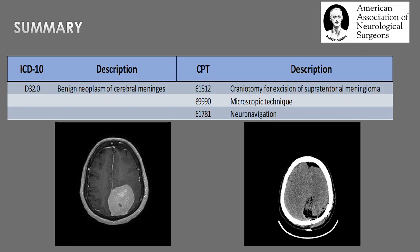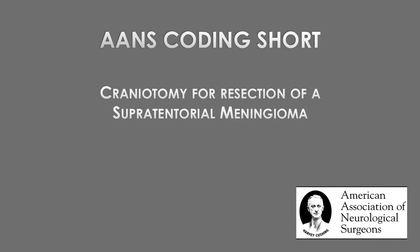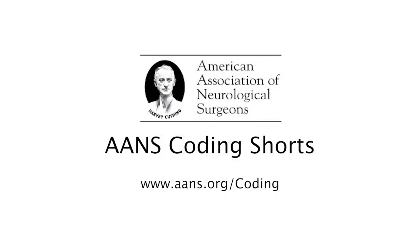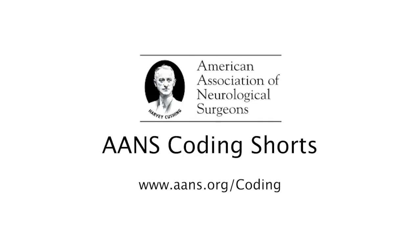To review what has been covered, we utilize the diagnosis code D32.0 for the supratentorial meningioma and the procedural codes 61512, 61781, and 69990 as previously described. This completes this AANS coding short. Thank you so much for your attention.